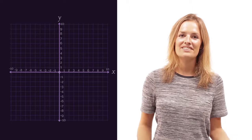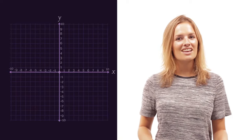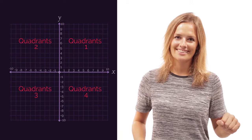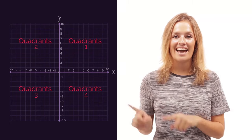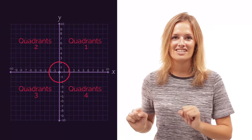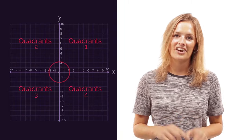Notice how the graph is divided into four sections. These are called quadrants. Notice how they're numbered in an anti-clockwise direction, starting at one and going around to four.